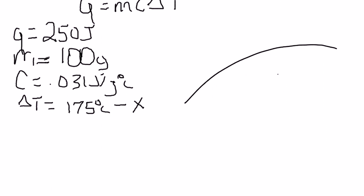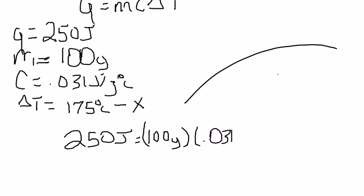Now, we need to plug in what we know into our formula. So 250 joules is equal to a mass of 100 grams times our specific heat, which is 0.031 joules per gram degrees Celsius. And our temperature change, 175 minus X.